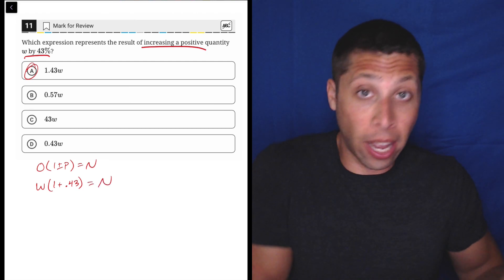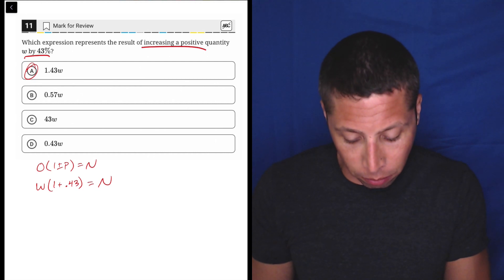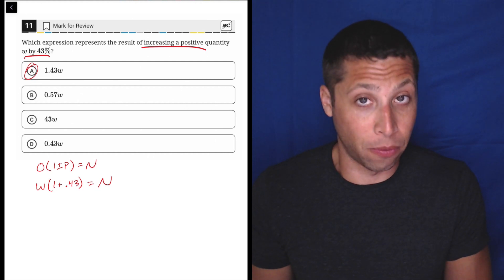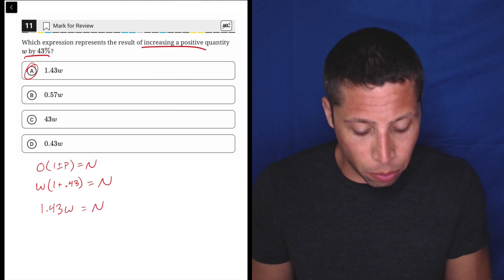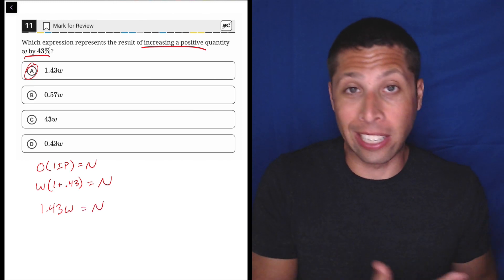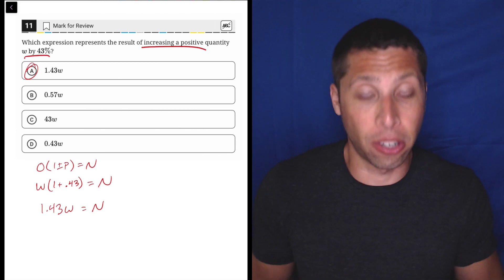And then the new amount is kind of what the answer choices represent. So here, if we just clean this up, 1 plus 0.43 is 1.43 and then times W. So we don't even need any sort of number here to see what's going to happen. So there again is our answer.